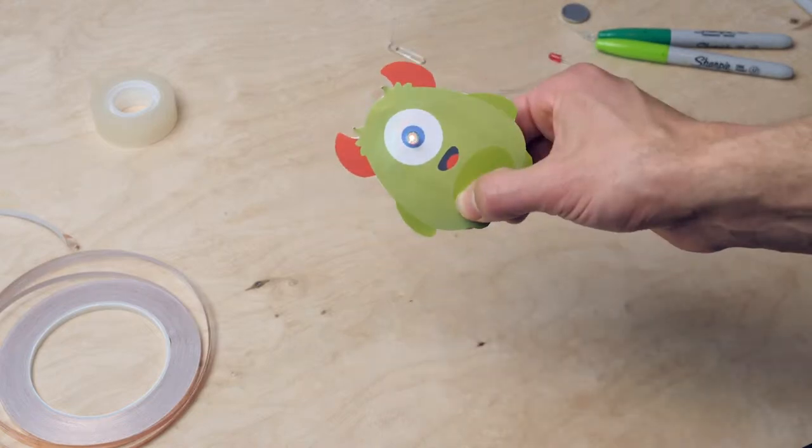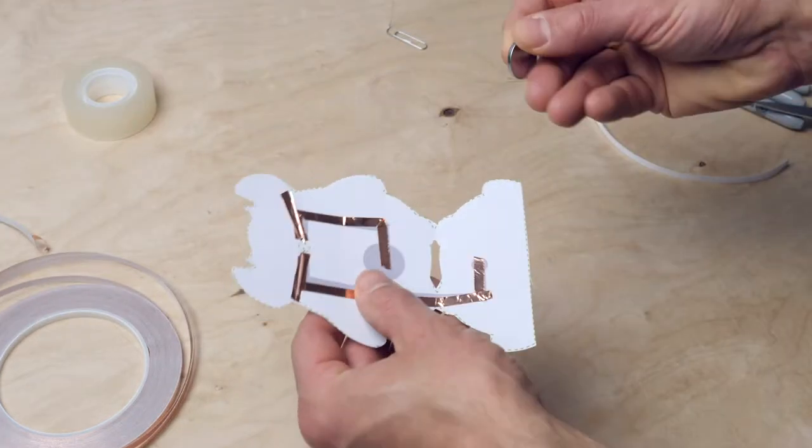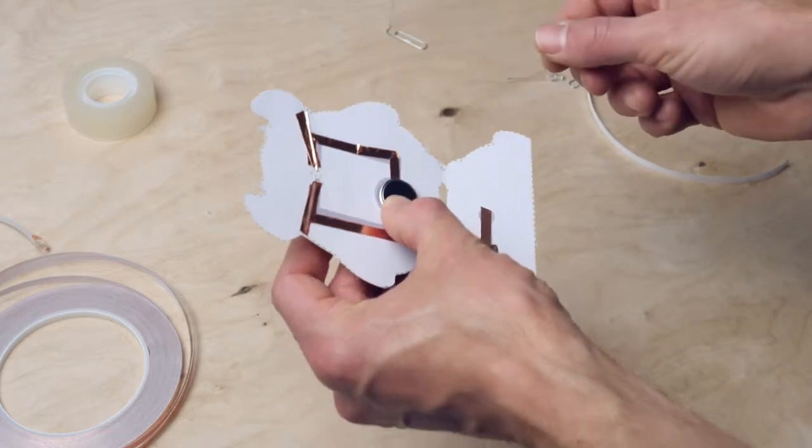That circuit had one path, but you could also make a circuit with more paths. Such a circuit is called a parallel circuit. It is a circuit with more than one path through which electricity can flow.